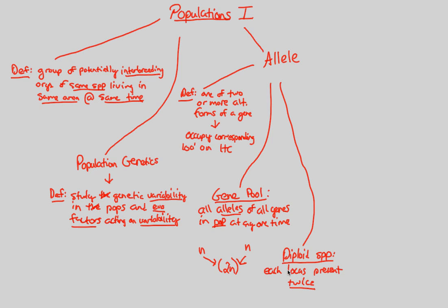Thus they have each locus represented twice. There's a hair color gene from mom and a hair color gene from dad. So that's what we mean by diploid species. This will be important as we move forward.